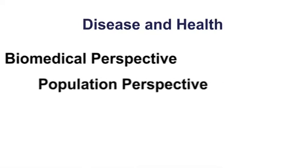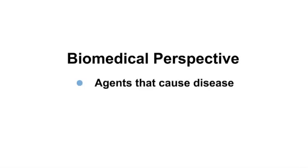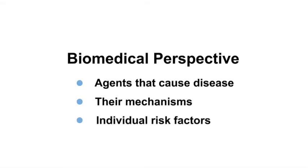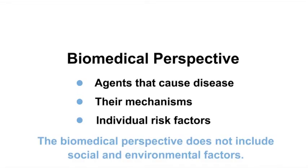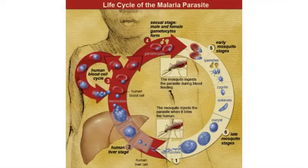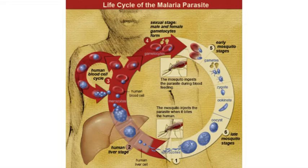Let's now briefly discuss two different perspectives on disease and health: the biomedical perspective and the population perspective. The biomedical perspective focuses on biological factors, such as specific agents that cause disease and their mechanisms, and focuses on individual risk factors for health outcomes — it does not include social and environmental factors. Researchers and clinicians observe and measure events that occur sequentially in someone's body when they come into contact with a disease agent or exposure. This example shows the mechanism for transmission of the malaria parasite to humans, without including information about the environment in which a human is exposed.